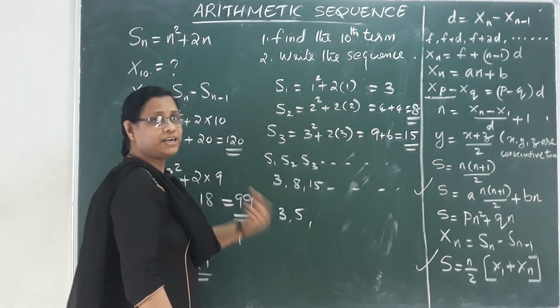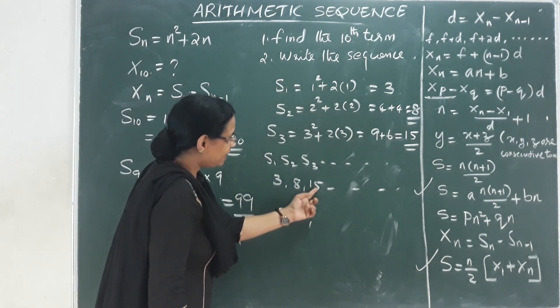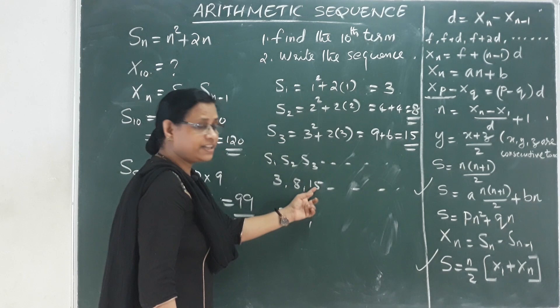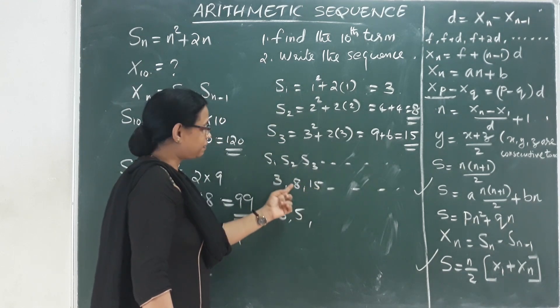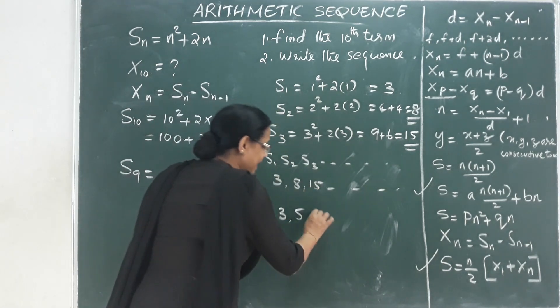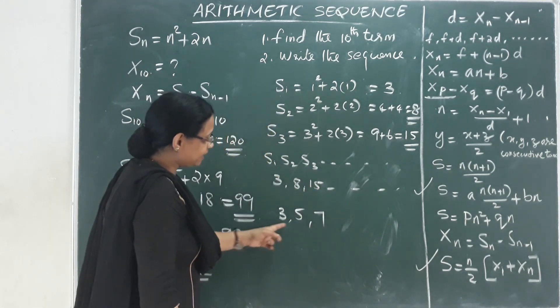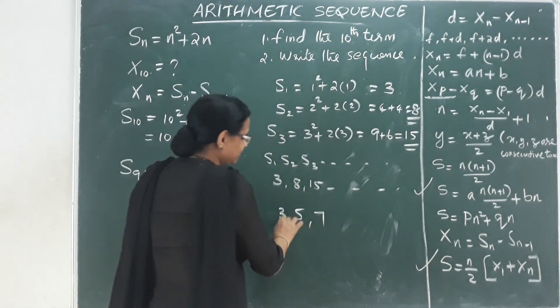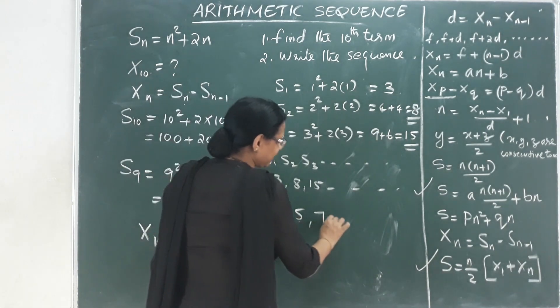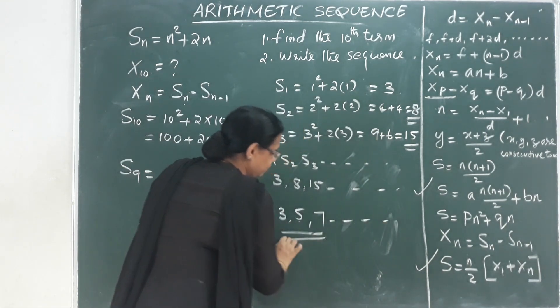The third term is found by subtracting S3 minus S2, that is 15 minus 8, which gives us 7. So we have the sequence: 3, 5, 7, and so on.